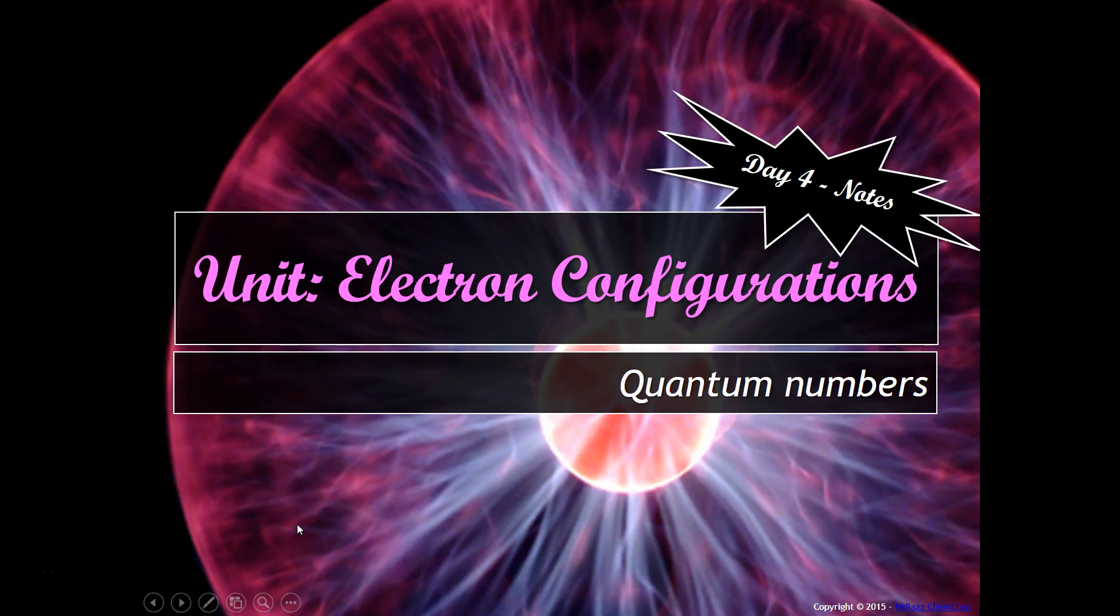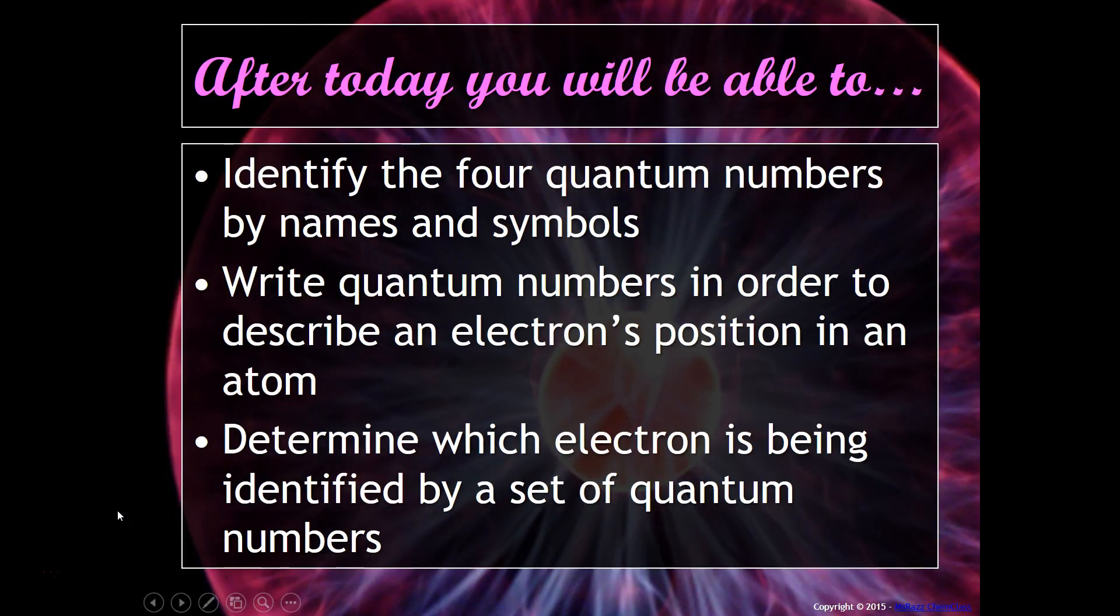Welcome back. You've had lots of practice writing orbital notations and electron configurations. There's one last thing that we need to talk about, which is called quantum numbers. After this video you'll be able to identify the four quantum numbers by names and symbols, write quantum numbers to describe an electron's position in an atom, and determine which electron is being identified by a set of quantum numbers.